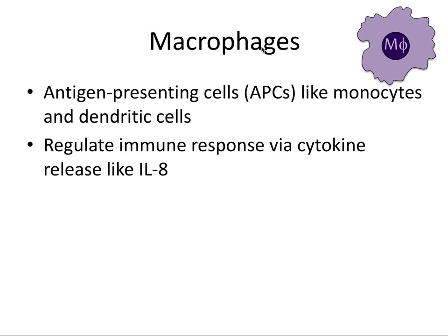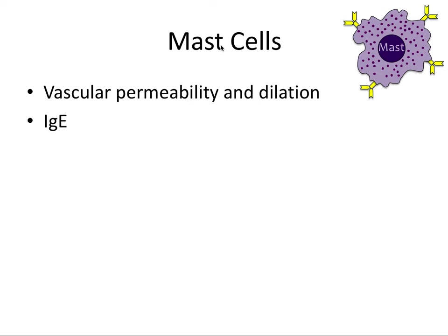The next immune cell is the macrophage. These are antigen-presenting cells including monocytes and dendritic cells, and they regulate the immune response by releasing cytokines like IL-8. Mast cells are also involved — they cause vascular permeability and dilation of blood vessels. They are well known for producing IgE (immunoglobulin E). This is a common board question on both Part 1 and Part 2 boards, so remember: IgE is always associated with the mast cell.